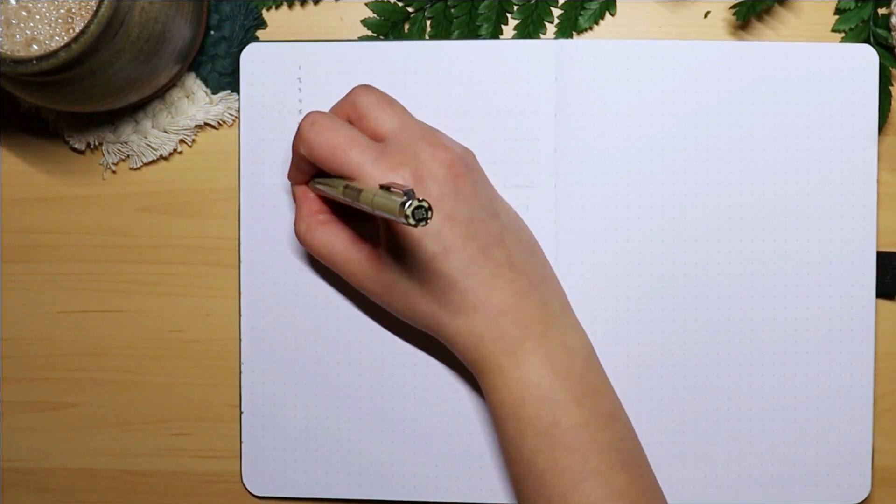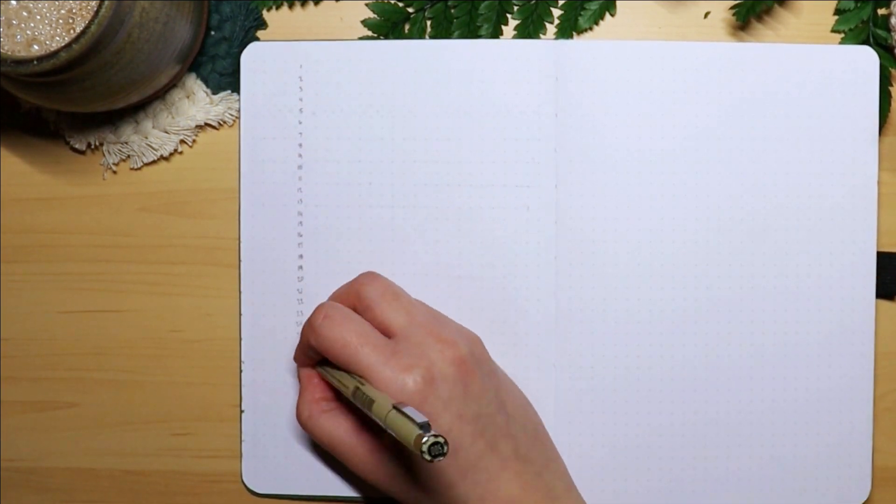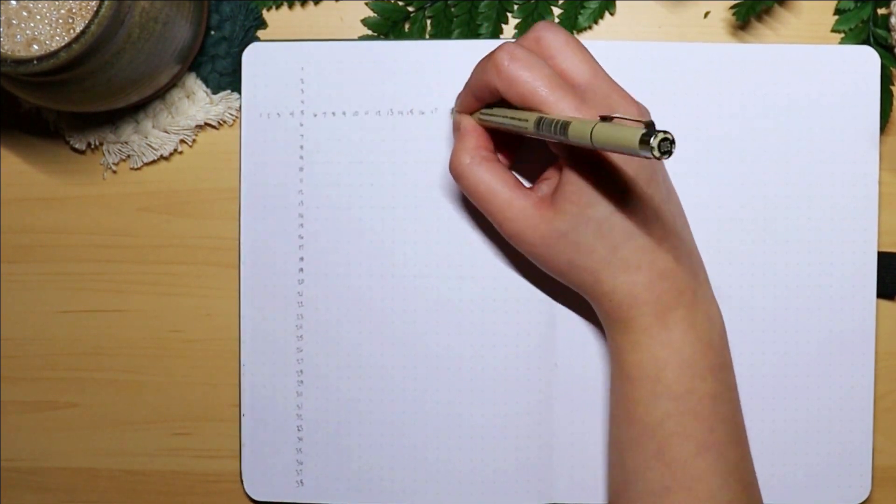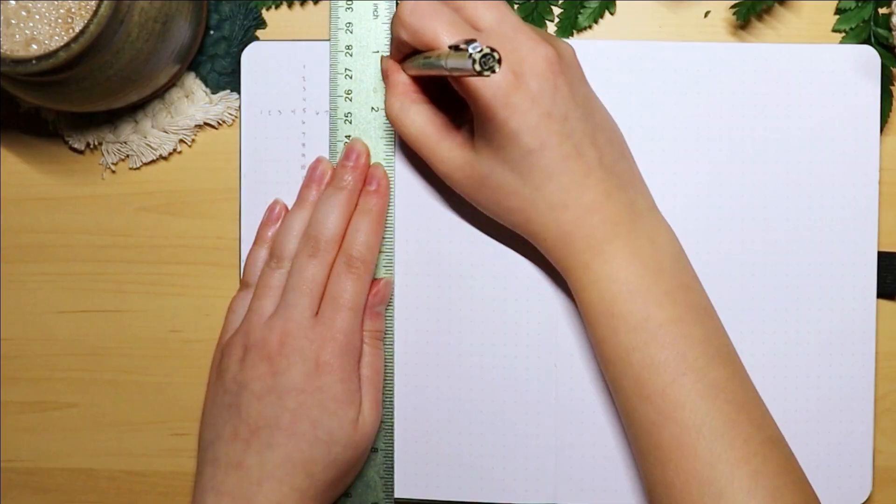Now onto my grid space guide which is nice to reference back to when I'm planning out a page. I first number down vertically and horizontally and then mark off my halves.